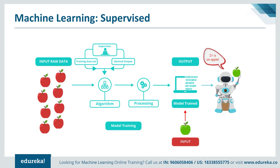Once the algorithm is trained, it can be used to predict the correct output for a never-seen input. You can see in the image on your screen that we are feeding raw inputs — images of an apple — to the algorithm. A supervisor keeps on correcting and training the machine, telling it yes, it is an apple, or no, it is not an apple. This process keeps repeating until we get a final trained model. Once the model is ready, it can easily predict the correct output for new inputs — for example, giving it an image of a green apple and the machine correctly identifies it as an apple.